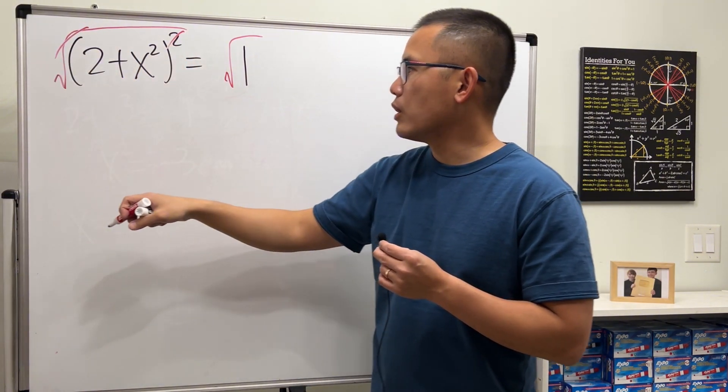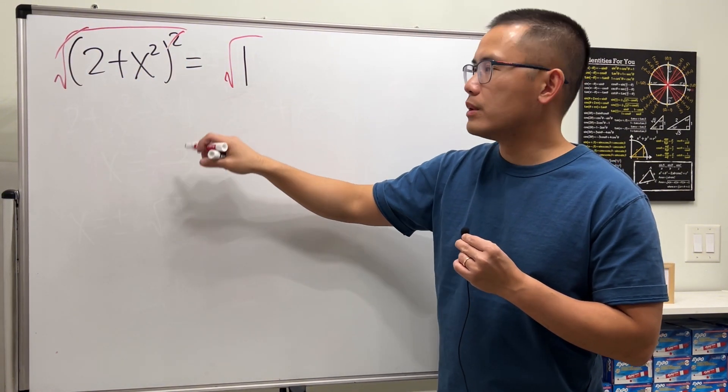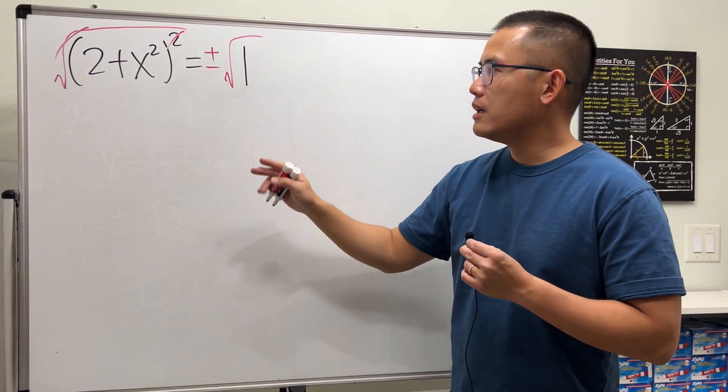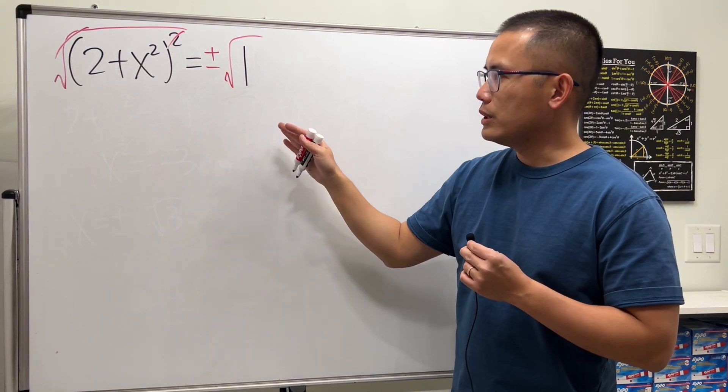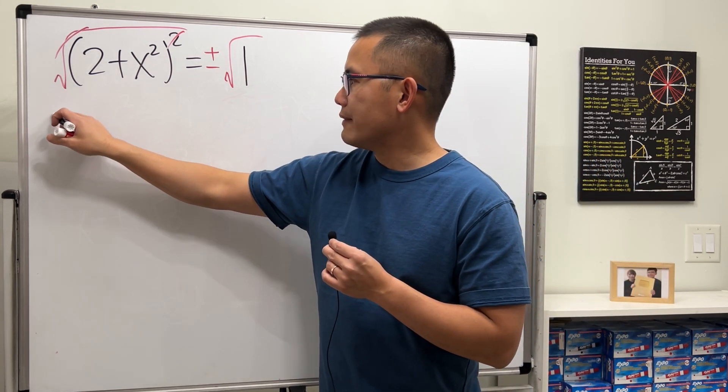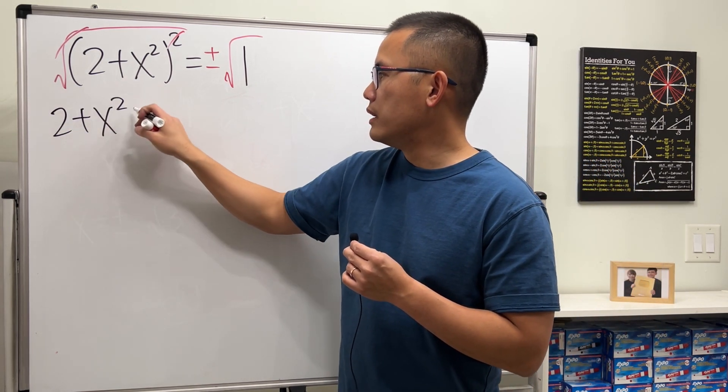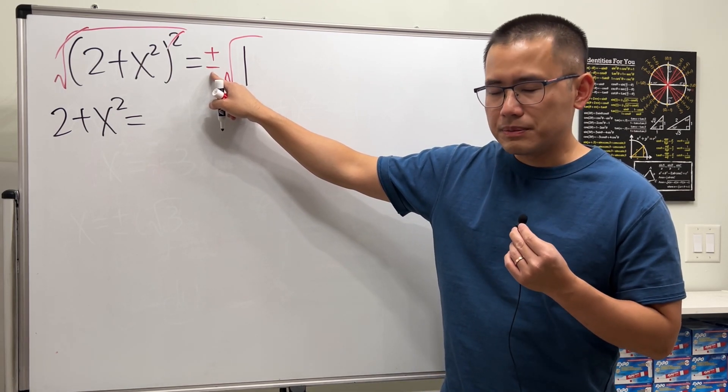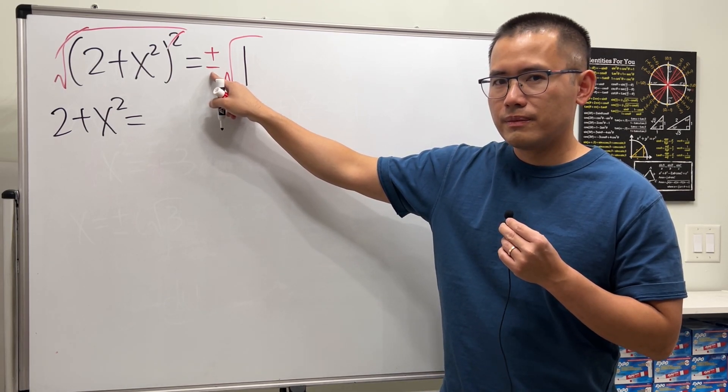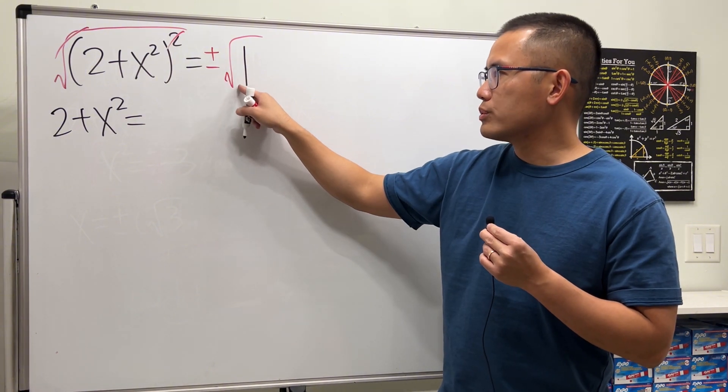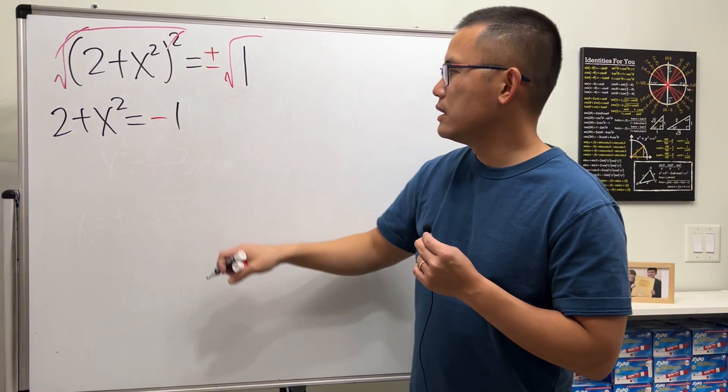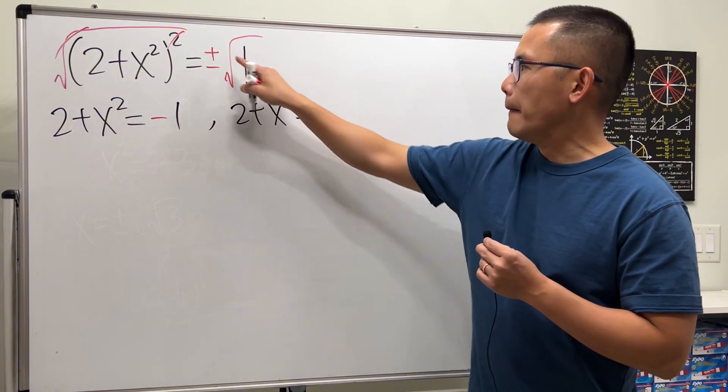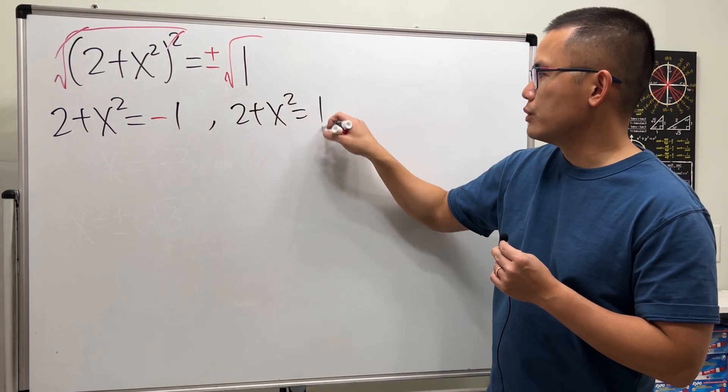That way, square and square root cancel, and we will have to remember to put down the plus and minus on the right-hand side. Now we are going to get two equations from here. The first one is when we have 2 + x² equals negative—let's do the negative first because people usually forget about the negative—negative square root of 1, which is -1. Next one: 2 + x² equals positive square root of 1, which is just 1.